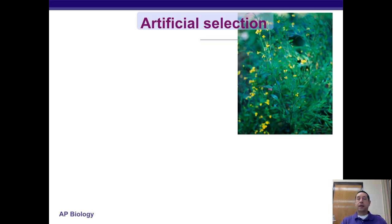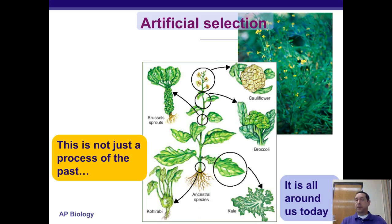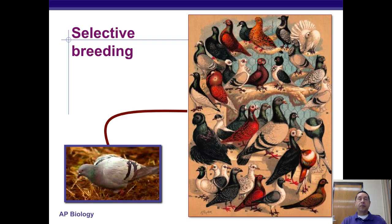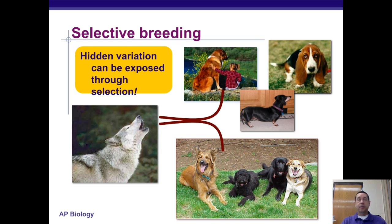Darwin also looked at artificial selection, where humans select certain traits. We can see this in the ancestors of many food species we eat today — like corn and broccoli — which looked very different from what we see now because we've selected specific traits. The same applies to domestic animals: through selective breeding, we pick the most desirable traits and breed only those organisms, resulting in all the different breeds of dogs, cats, and other domesticated plants and animals.